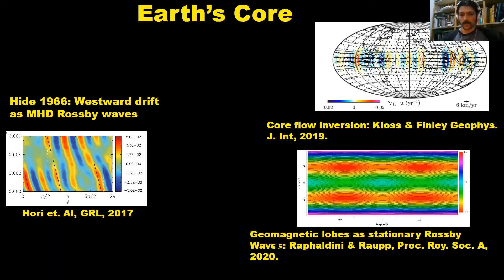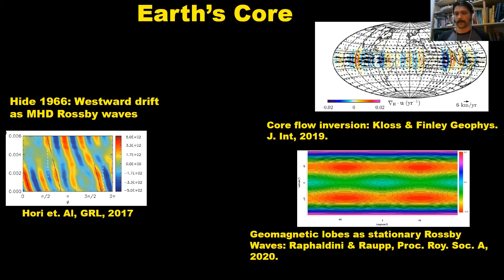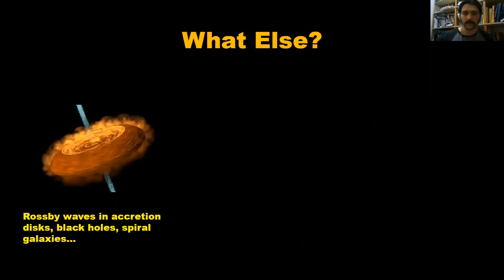Also, earlier this year we published a paper in the Proceedings of the Royal Society, suggesting that geomagnetic flux spots — localized and stationary structures of the geomagnetic field — can be caused by stationary Rossby waves that have their propagation locked by either topography or heterogeneous heat flow patterns at the core-mantle boundary.